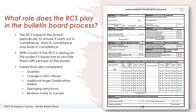What role does the RCS play in the bulletin board process? The RCS inspects the board periodically to ensure it starts out in compliance and stays in compliance throughout the duration of the project. With COVID-19, the RCS is relying on project inspectors to provide pictures of the board. Inspections are completed quarterly, as well as when there are changes to EEO officers, additional wage classifications to be added, damaging weather events, or revisions to a poster.